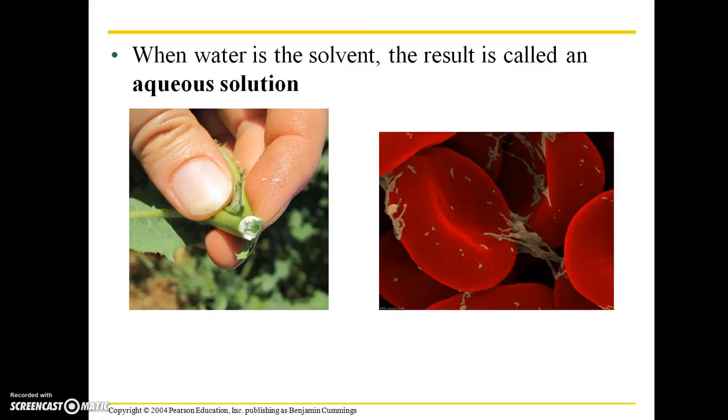When water is the solvent, the result is called an aqueous solution. So some examples of that are plant sap. Many plants have this milky sap, and it's actually primarily composed of water, but there are dissolved solutes within that water. And then our own red blood cells would also be an aqueous solution.